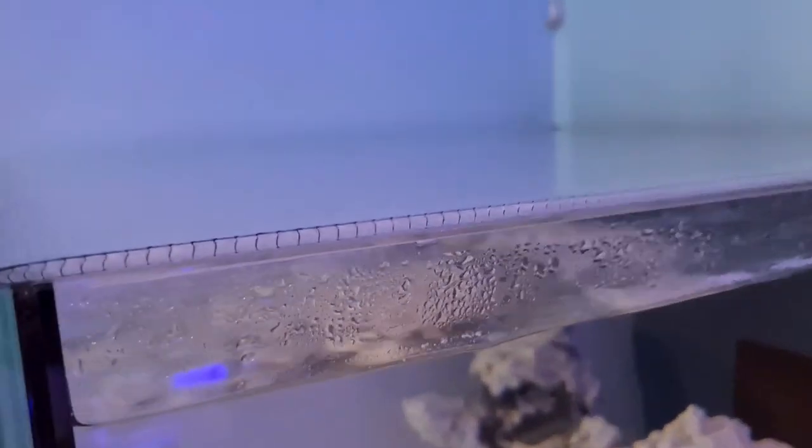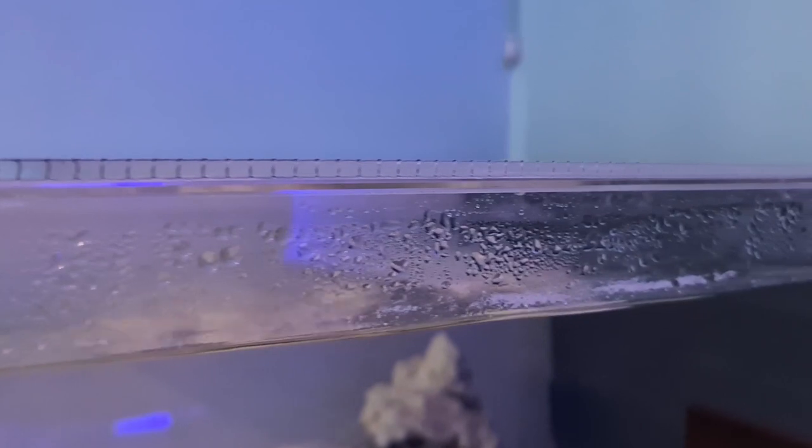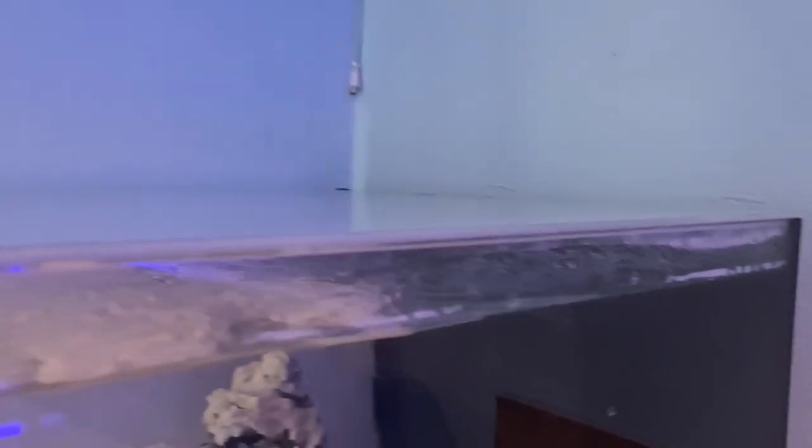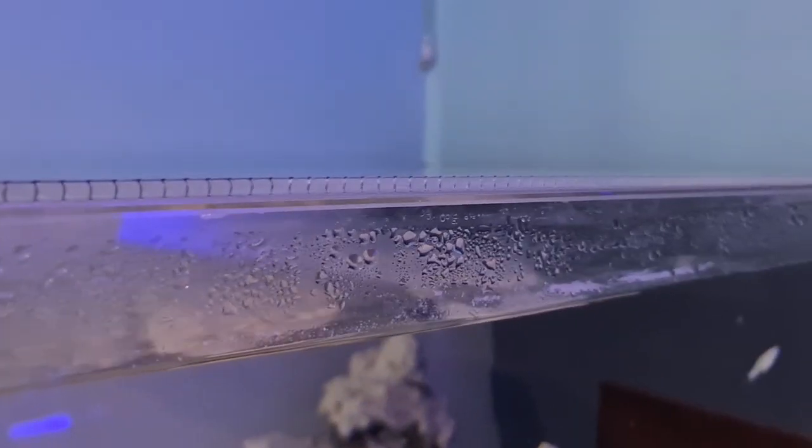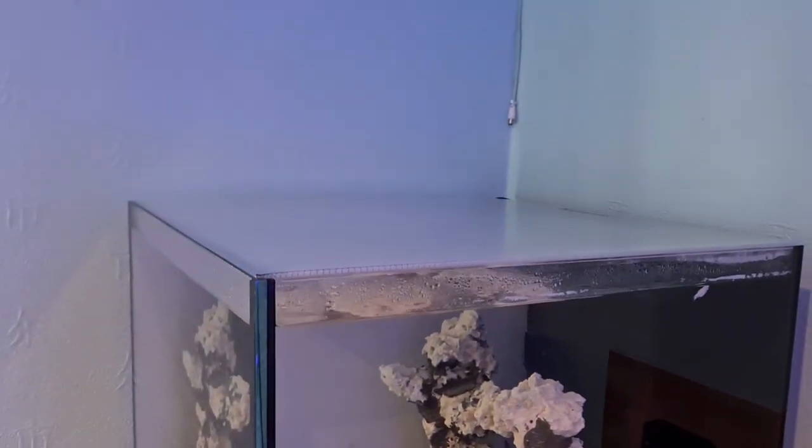4mm twin wall polycarbonate barely sits above the tank, just a 4mm raised edge, so not big and chunky. Even some of the commercial lids that are available are thicker than this. Really nice low profile on there.